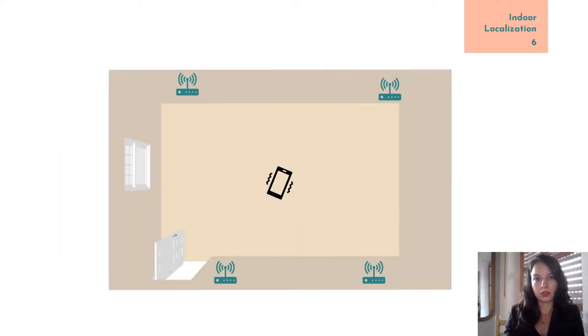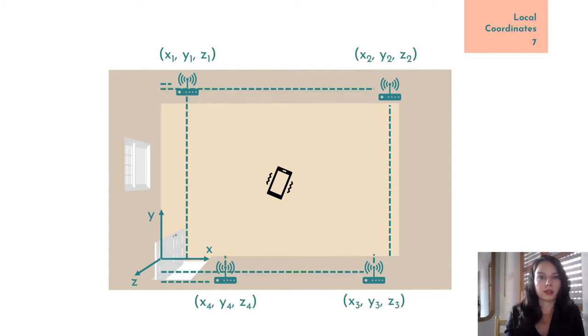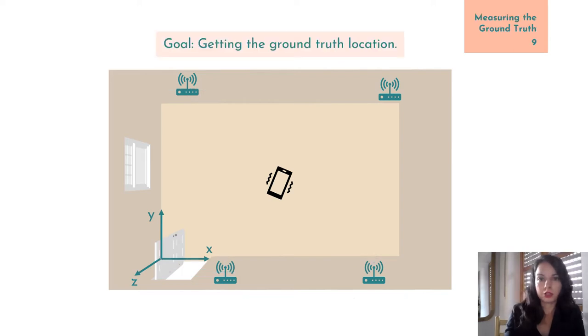In an indoor localization system, we usually place the anchors along the walls of a room or of multiple rooms depending on our setup. The anchors are installed by an administrator who measures their location relative to one another, and the anchors usually remain fixed afterwards. One way to measure the location of the anchors is to choose the origin of a local coordinate system, for instance, in one corner of the room, and then measure the coordinates of each anchor relative to it.